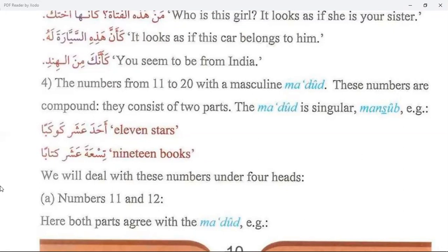Three students: thalasatu tulabin. Four students: arba'atu tulabin. Five students: khamsatu tulabin. Six students: sittatu tulabin. Seven: sab'a. These are the numbers from one to ten for the masculine.